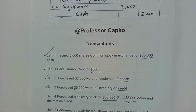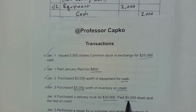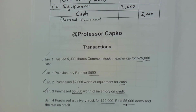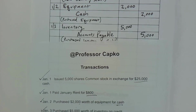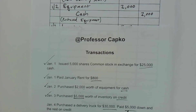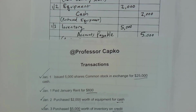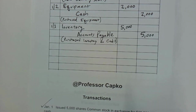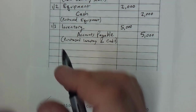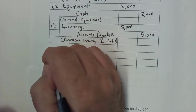Our cash is going down because we're paying it out. So therefore we're going to credit cash. So we're going to look at what we're going to debit and what we're going to credit. Our delivery truck is an asset, so I'm going to put the date here — 1-4.